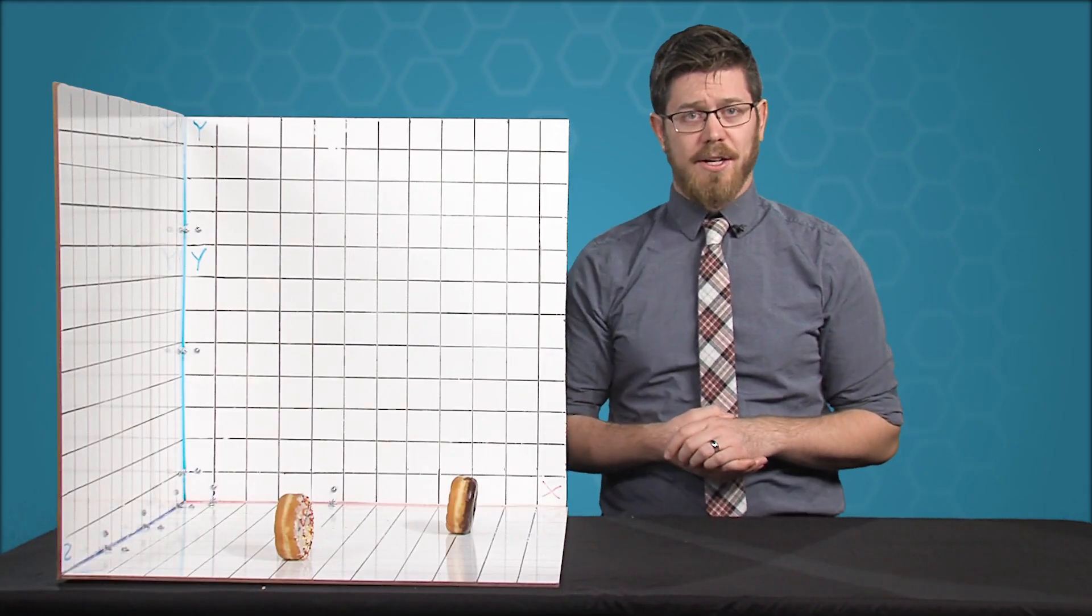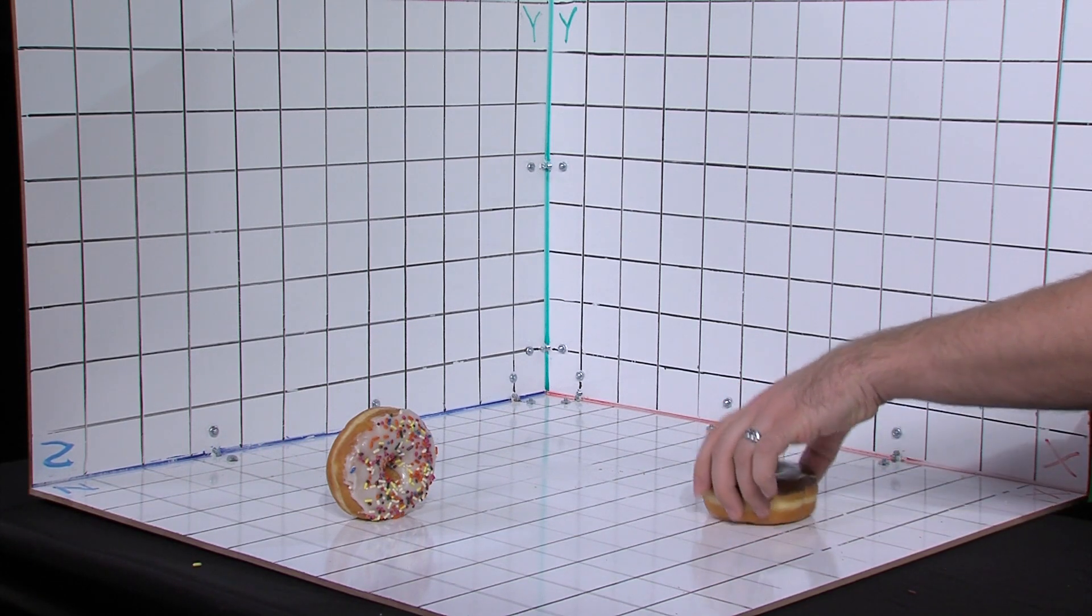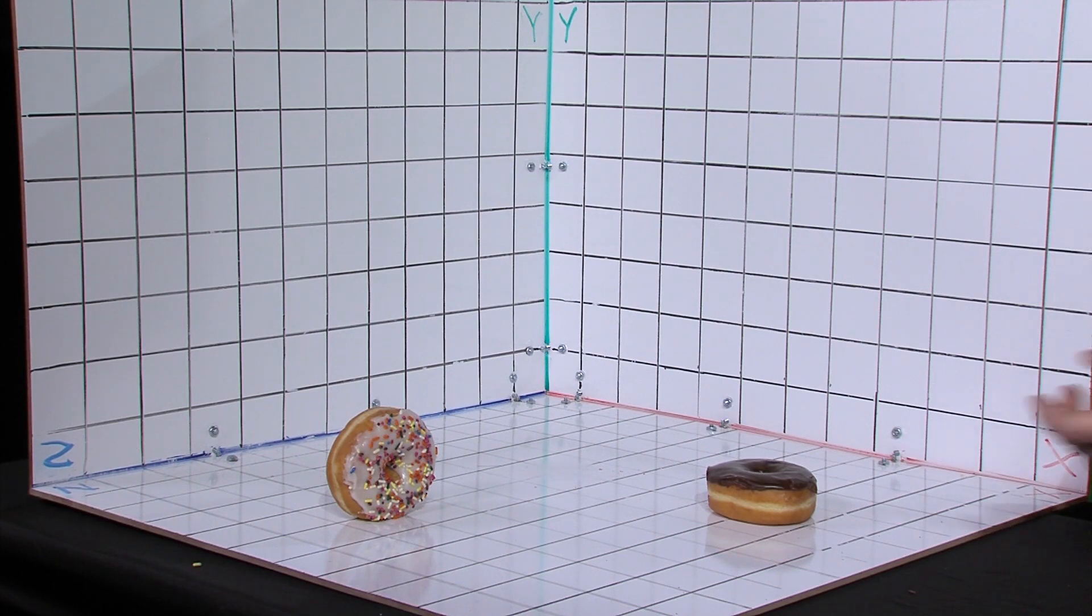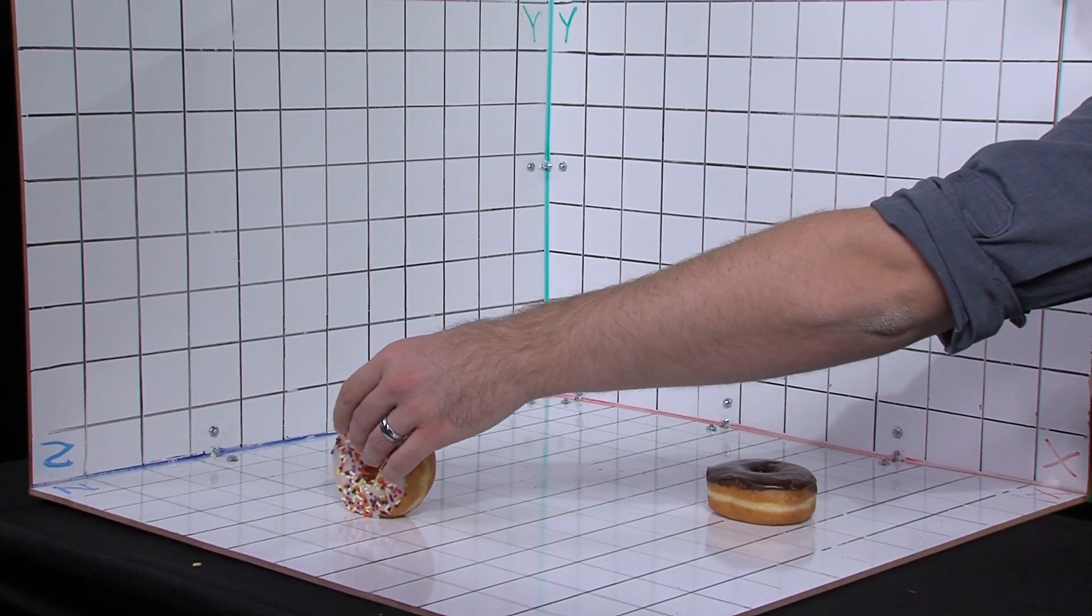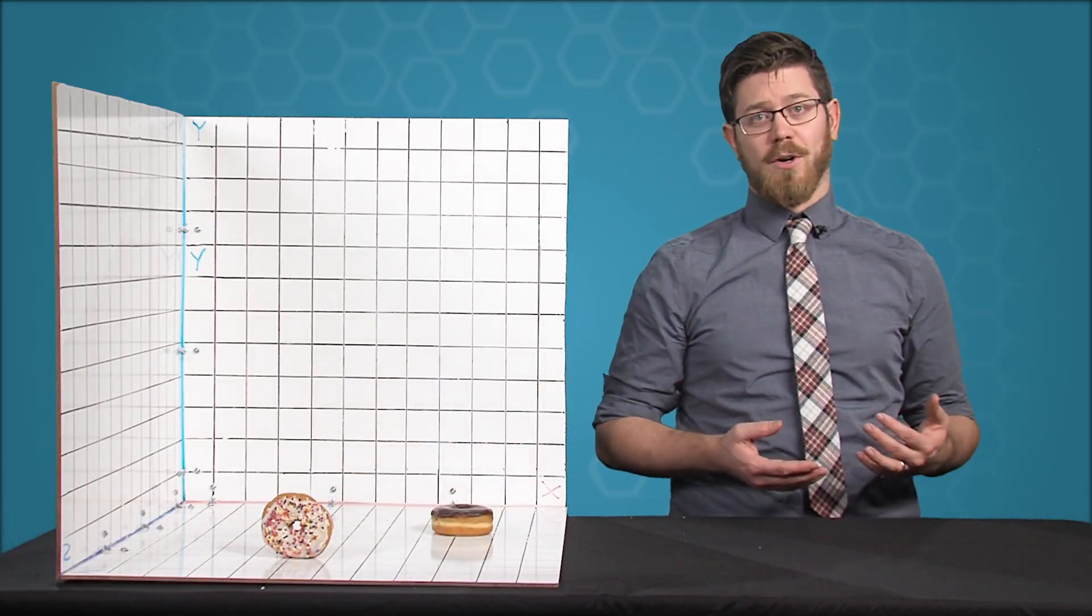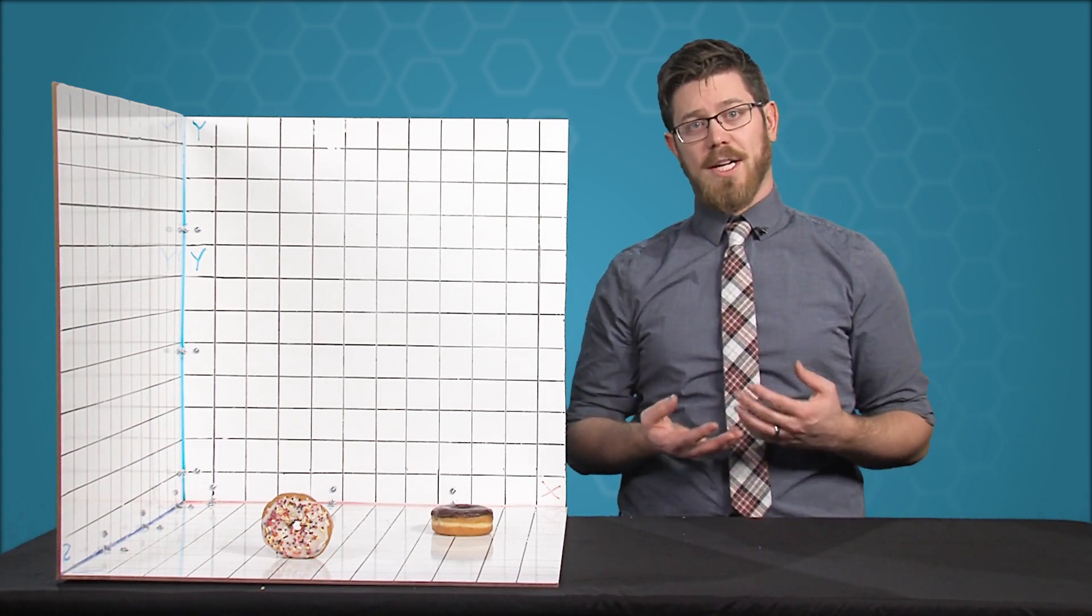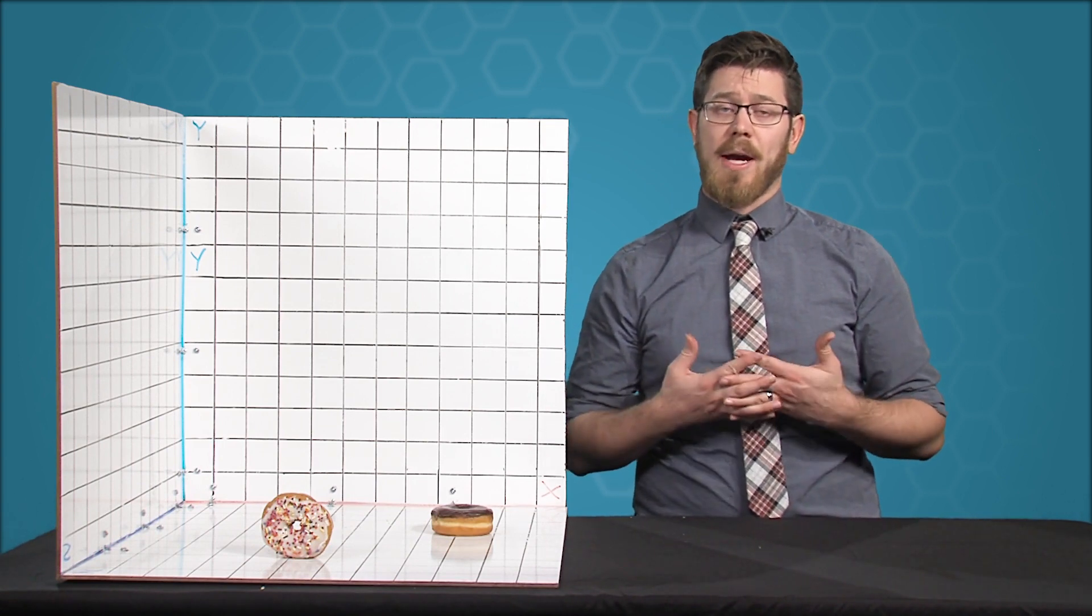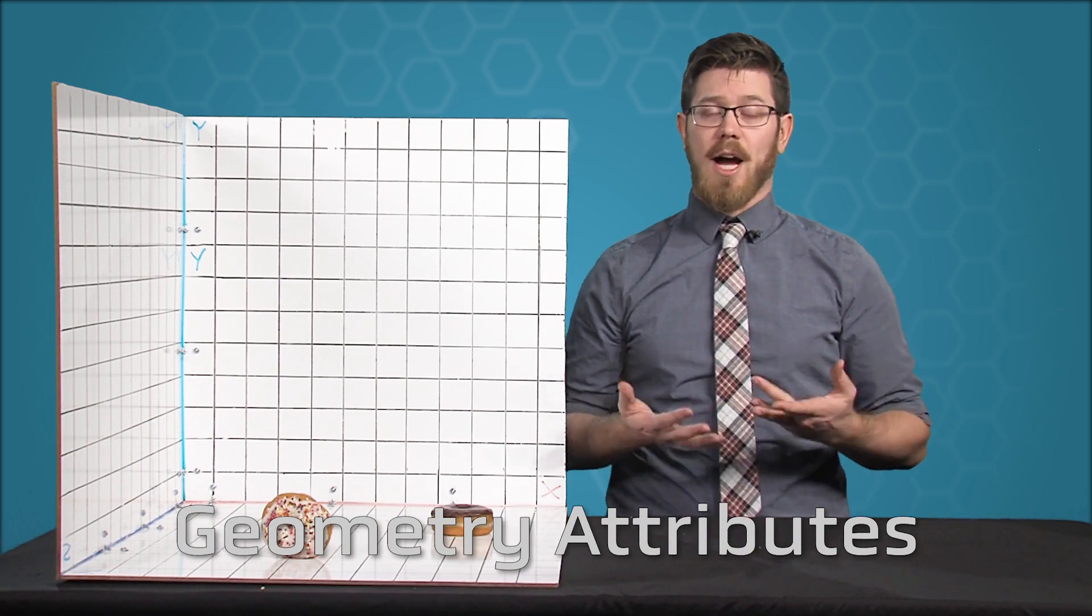Even the order of rotations matters. You can see that if I rotate this donut by 90 degrees around its z-axis and then 90 degrees about its y-axis, it ends up with a very different orientation than if I rotate this donut around its y-axis and then around its z-axis. As I mentioned before, all computer graphics geometry has a transformation describing its translation, rotation, and scale. But often there are other values needed to describe how we want to alter a shape. These extra values are called geometry attributes.